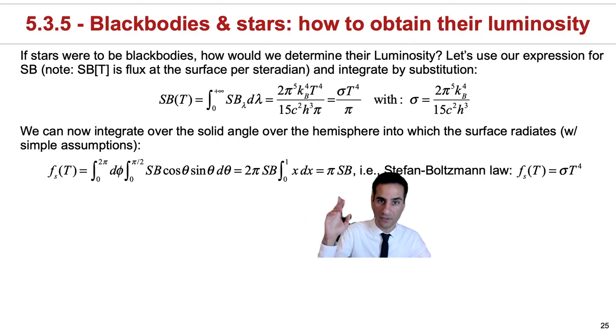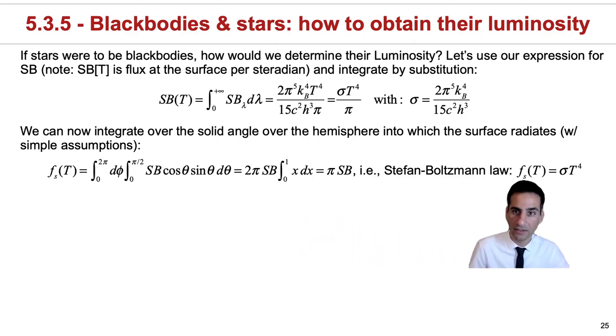This is the reason why I left pi on top, so that it cancels out, and in the end what you recover is a flux. So this is no longer a flux per steradian, but it's still a flux over the surface of this object, which is given by the Stefan-Boltzmann law. This is sigma times T to the power of four.